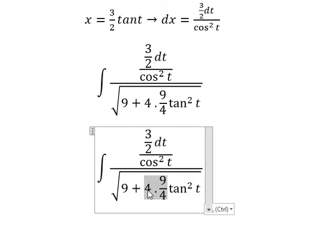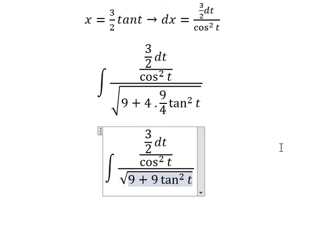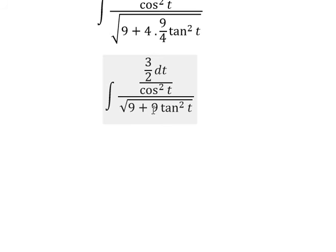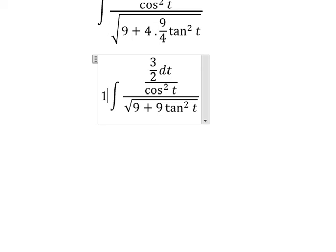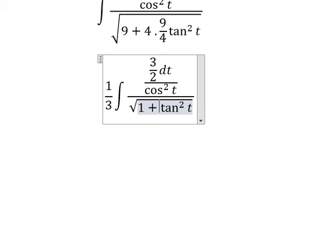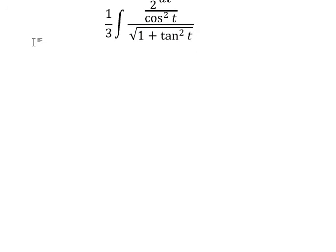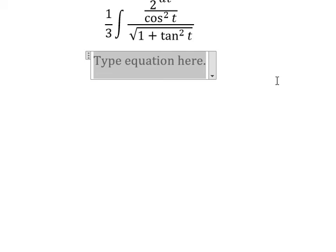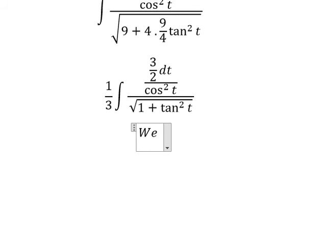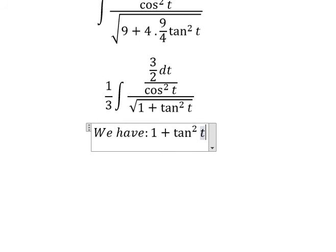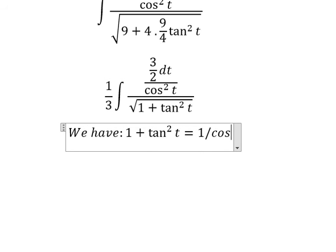We put the square root of 9 outside and you got about 1 over 3. We have the formula 1 plus tan squared t equals to 1 over cos squared t.